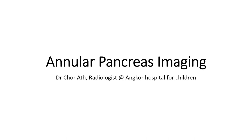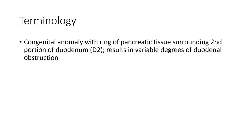Hello everyone. Today I'm going to show you about annular pancreas imaging. Annular pancreas is a congenital anomaly with rings of pancreatic tissue surrounding the second portion of the duodenum, resulting in variability and decrease of duodenal absorption.